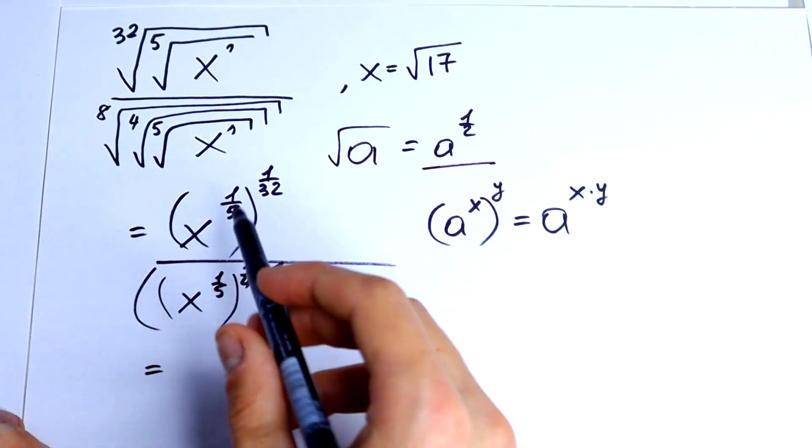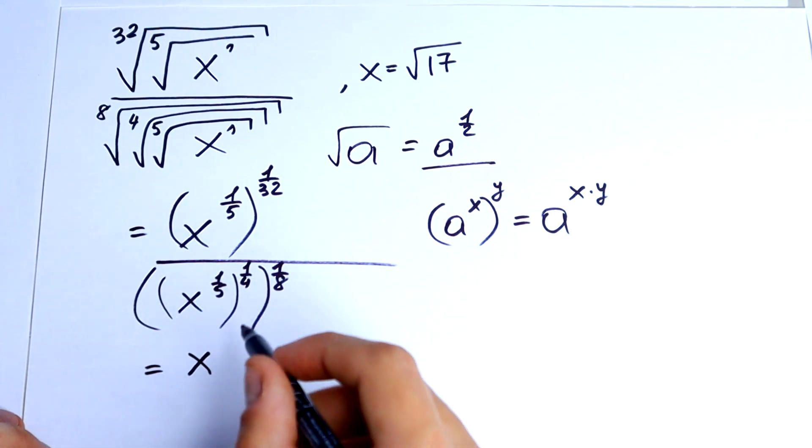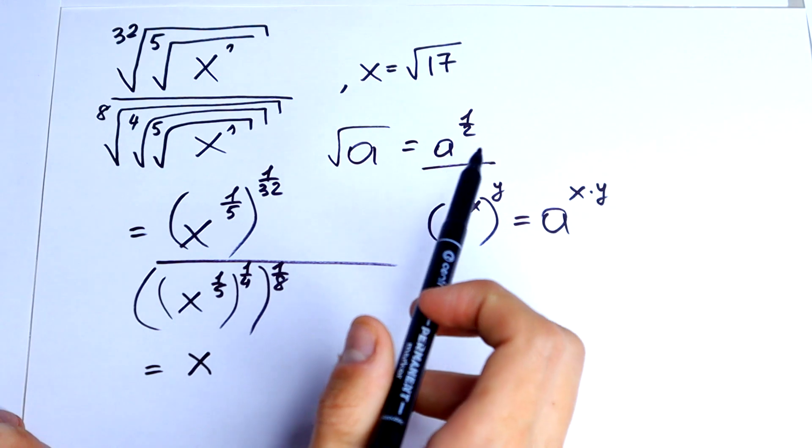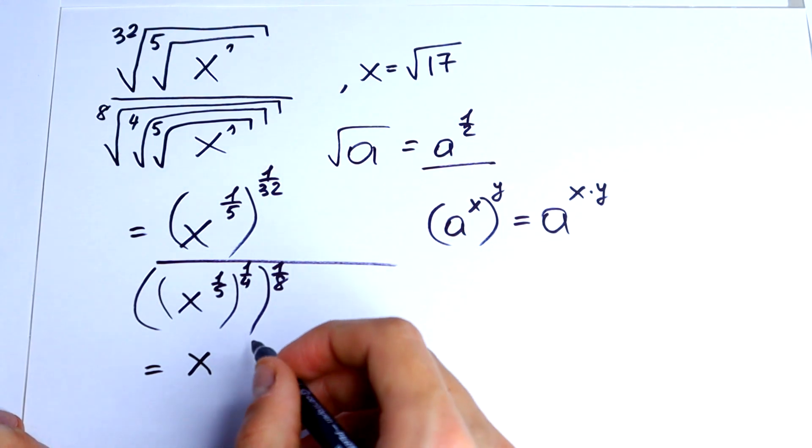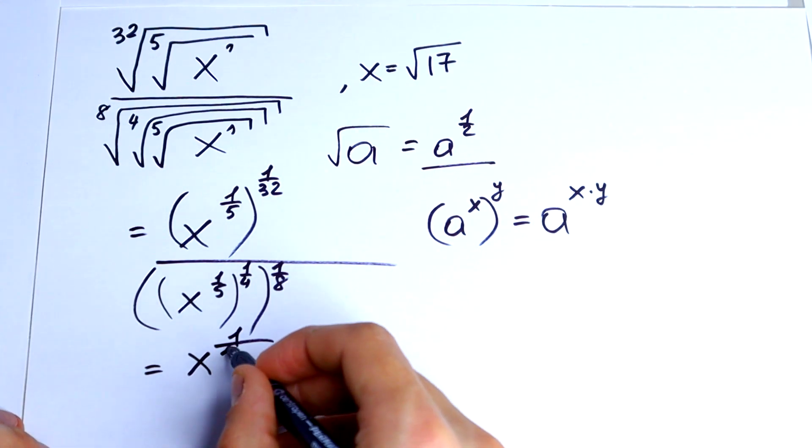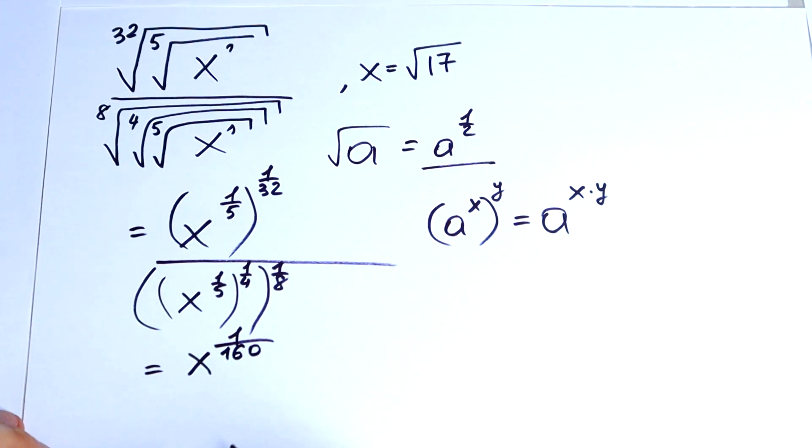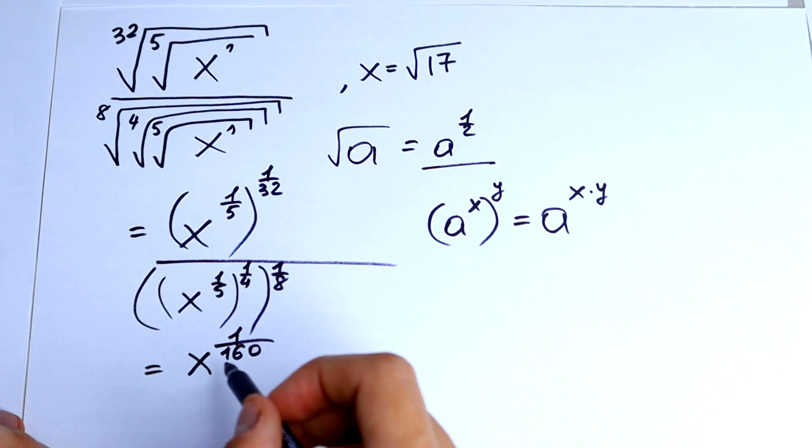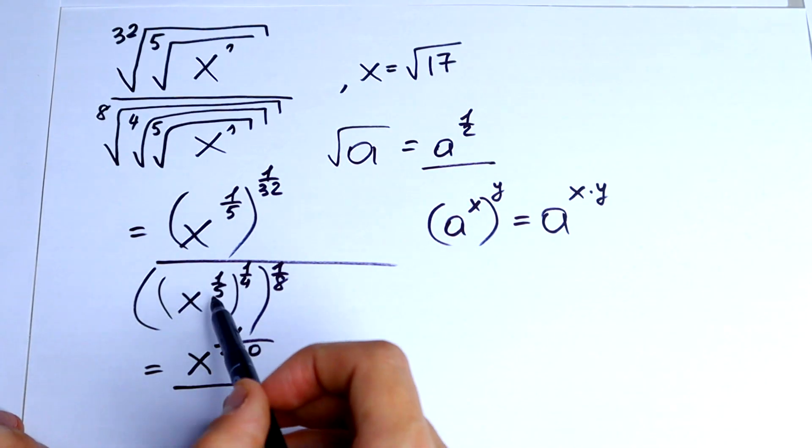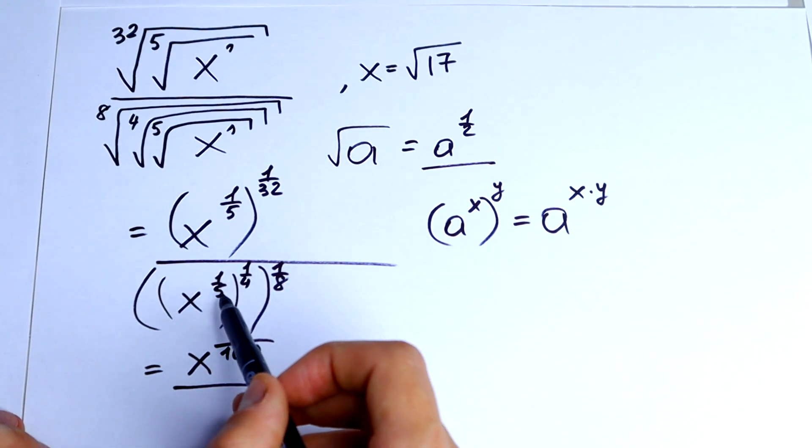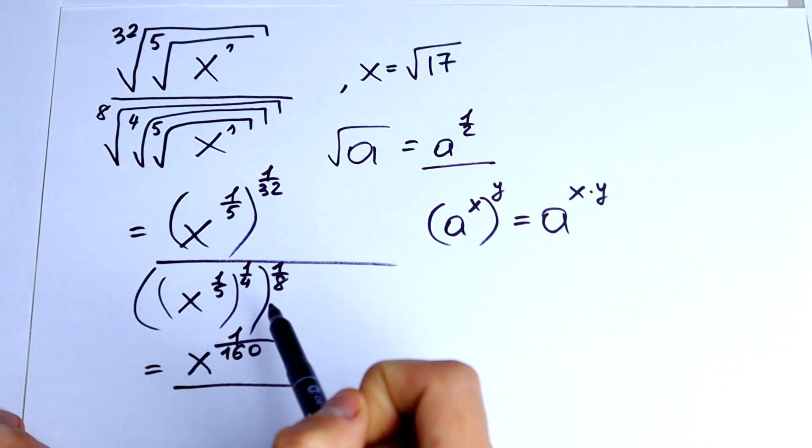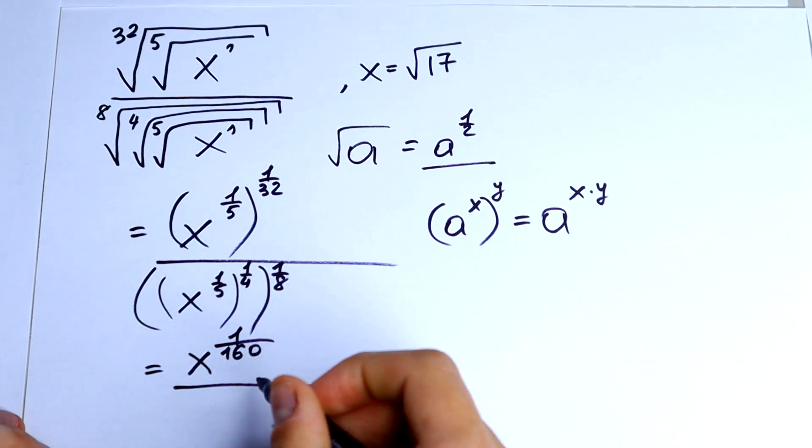So as a result we will get x to the power 5 times 32, it would be equal 160. And on the bottom 5 times 4, 20, 20 times 8, 160.